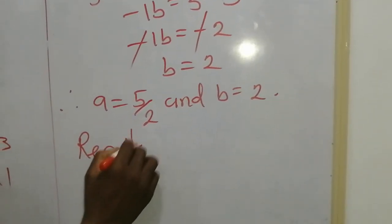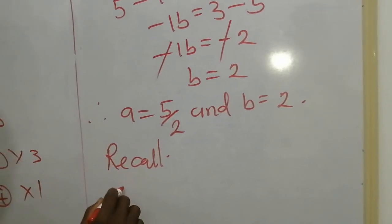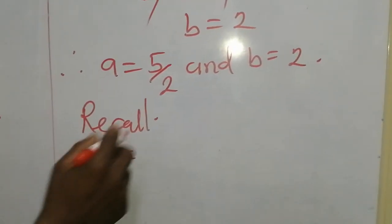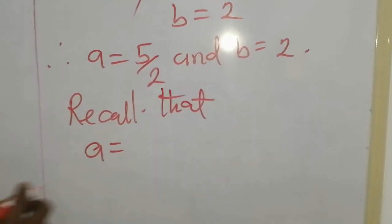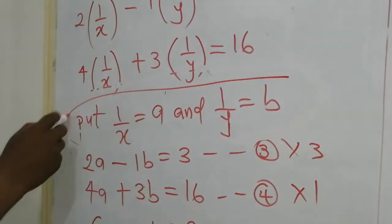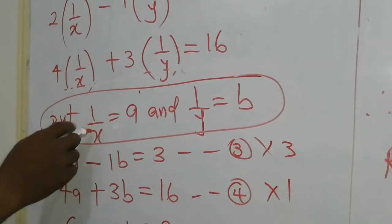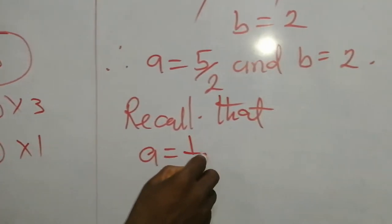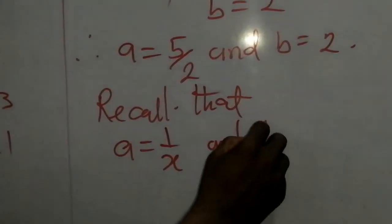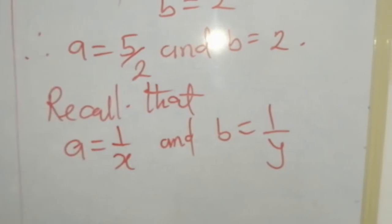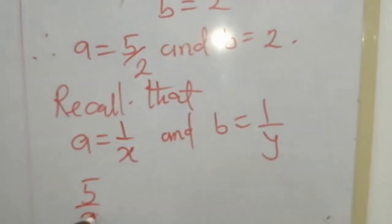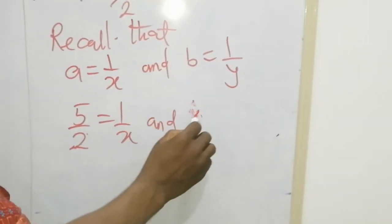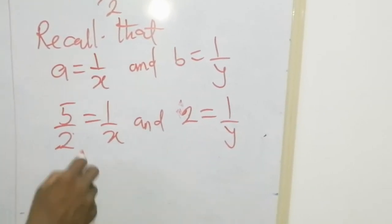Recall that at this point, we put 1 over x equals a and 1 over y equals b. So recall that a equals 1 over x and b equals 1 over y. We have got our a as 5 over 2 equals 1 over x, and our b which is equal to 2 is now equal to 1 over y.